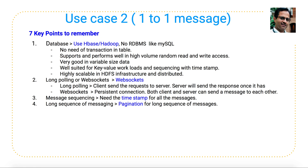The fourth key point is long sequencing of messaging. If the receiver is offline, all messages get stored in the database. As soon as the receiver comes online, they might receive a lot of messages at once. If pagination is not covered, the user's messages will get scattered. So you want to make sure pagination is covered when designing chat applications like WhatsApp or Facebook Messenger.